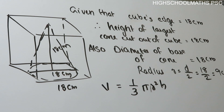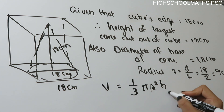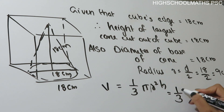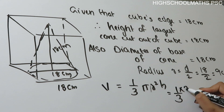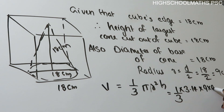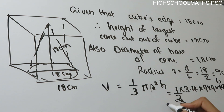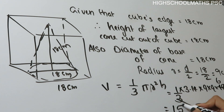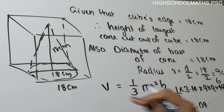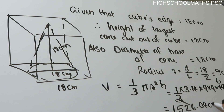The pi value is 3.14. So: Volume = 1/3 × 3.14 × 9 × 9 × 18. The answer is 1526.04 cubic centimeters.